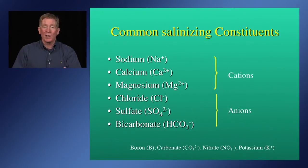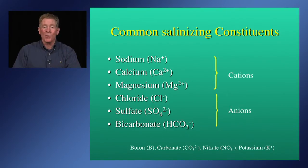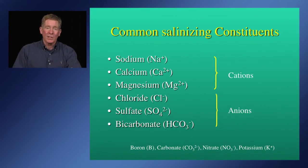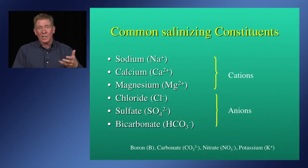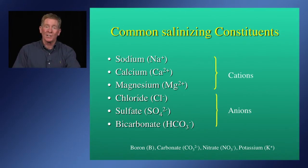Bicarbonate is another constituent in irrigation waters, but typically it's not high enough to be a concern unless the pH of the water is very high, in which case it can cause problems like clogging drip emitters. Nitrates are a nutrient and typically not very high in concentration in waters, but in certain places — shallow groundwaters and wastewaters from animal feedlots — there can be high nitrate levels. Potassium is not very high in irrigation water because it's controlled by the solid phase in the soil, but high concentrations can occur in food processing plant effluent used for irrigation.